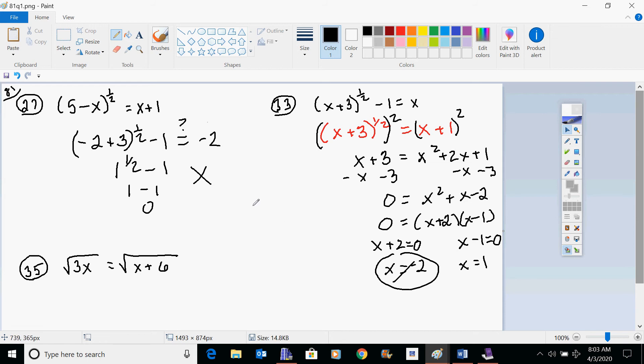However, let's check the other one. Let's check in with the 1. 1 plus 3 to the 1 half power minus 1. We're checking to see if that equals 1. So this would be 4 to the 1 half power. Square root of 4 is 2. 2 minus 1 does equal 1. This checks out. So x equals 1 is your only solution.